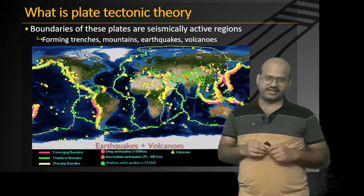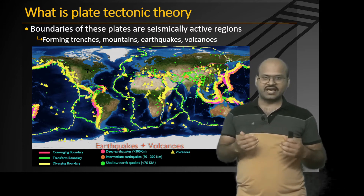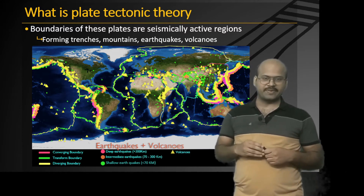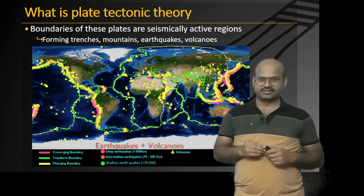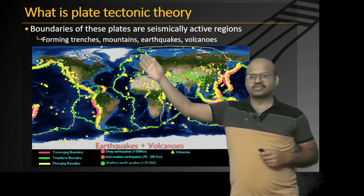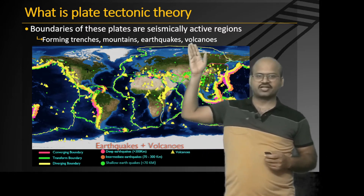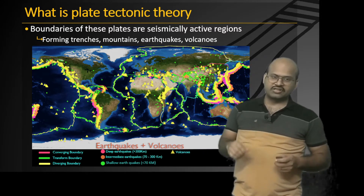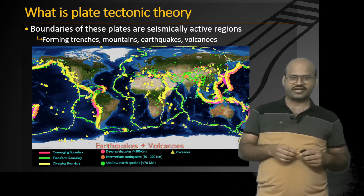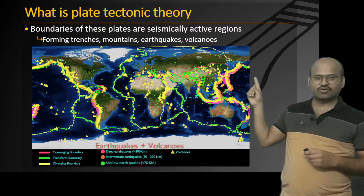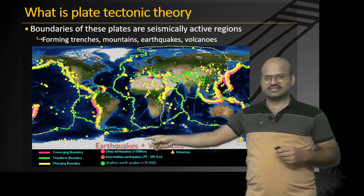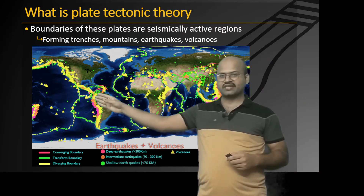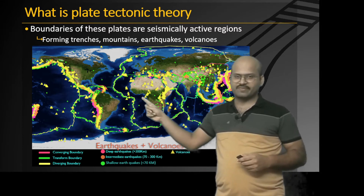The plate tectonic theory also says that the boundaries of these plates are seismically very active because plates moving independently collide or move apart, creating very active boundaries. It is at those boundaries that we see formation of trenches, mountains, earthquakes, and volcanoes. The seismic activity is concentrated at these boundaries, and we can see that volcanoes and earthquakes are concentrated along these boundary lines.